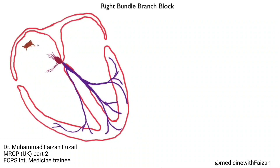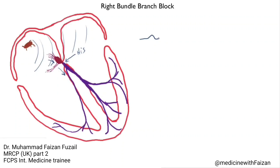By now, you're familiar with the electrical system of the heart, with the sinus node that gives rise to the P wave as the signal spreads across the atria. Then the signal enters the AV node, gets delayed for a split second, and then is passed down through the HIS bundle and the bundle branches, which results in depolarization of the ventricles that gives rise to the QRS complex.